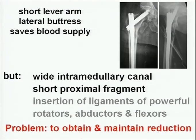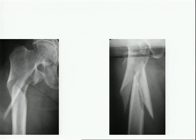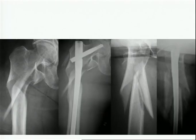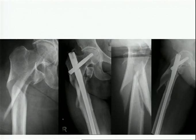But there is still a problem: the wide intramedullary canal and short proximal fragment make it difficult to obtain and especially to maintain reduction through the nail. If you have a sub-trochanteric reverse oblique fracture and just slide in a nail without caring for reduction, the result is unacceptable. The nail can be inserted without doing anything to the fracture, it won't heal because the cortices are too far apart — after eight months it still hadn't healed — and it's only a question of time before the nail fails and breaks.